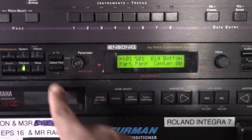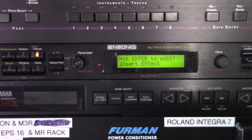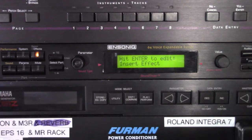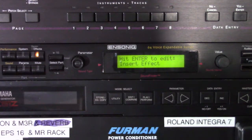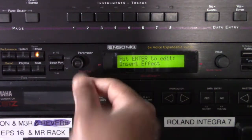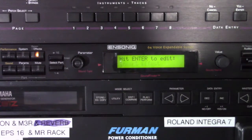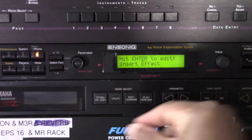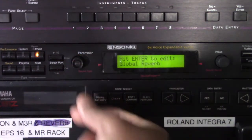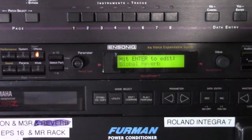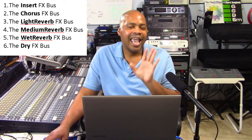The MR Rack contains a 24-bit effects processor that provides a wide range of effects that can be applied to any sound. Each performance contains three types of effects: the first is an insert effect, which can be borrowed from one of the sounds in a performance; the second is a global chorus; and the third is a global reverb. For maximum flexibility, the MR Rack offers six buses: an insert effects bus, a chorus effects bus, a light reverb effects bus, a medium reverb effects bus, a wet reverb effects bus, and a dry reverb effects bus.